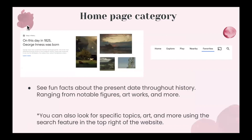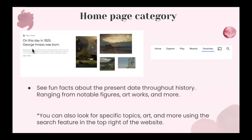On the homepage, you can also see fun facts about things including present dates and over the course of history. This ranges from notable figures, artworks, and even more. You can also look for specific topics, art, and museums using the search feature — the magnifying glass in the top right-hand corner. For example, there's a Today in History section showing what happened on a given day. It says on this day in 1825, George Innes was born, and shows some of the artist's artwork.